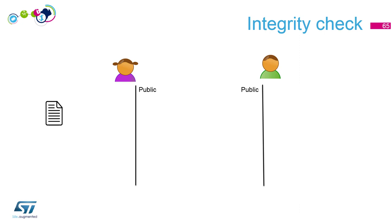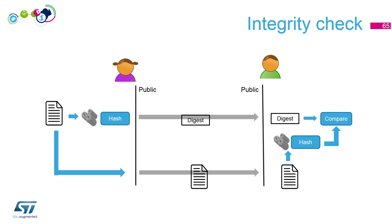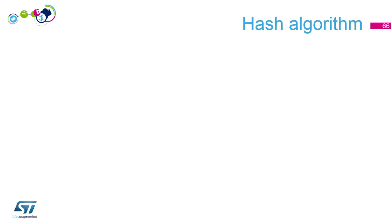Alice writes her letter and uses a hash function to generate a digest. She sends this digest to Bob along with her letter. Bob can ensure the text has not been modified because he will hash it again and should find exactly the same digest computed by Alice. If they match, the text has not been modified — quite simple. We'll discuss the security perspective after.